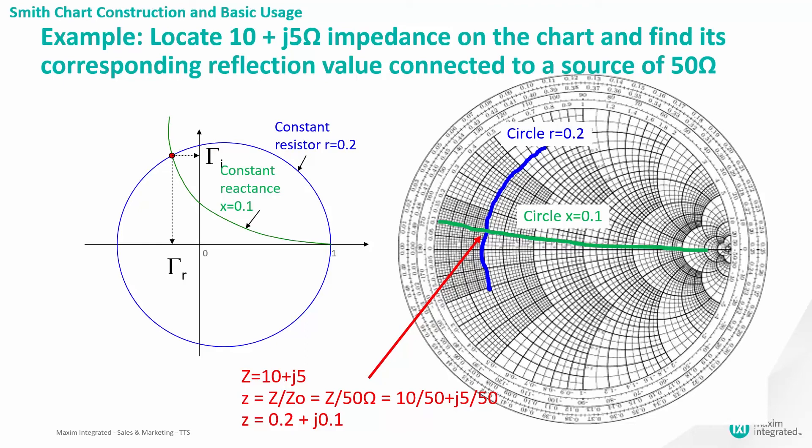On the chart, we'll find the real circle corresponding to the value R equals 0.2. Then, we'll find the imaginary circle corresponding to the value X equals 0.1. The intercept of the two circles represent the given impedance. Read on the horizontal and vertical axis the value of gamma.